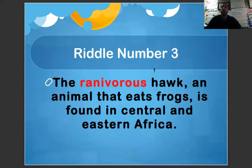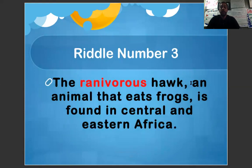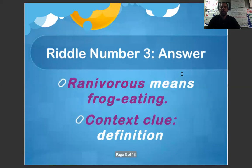Number three. The ranivorous hawk, an animal that eats frogs, is found in Central and Eastern Africa. Answer: ranivorous means frog eating. Our context clue was the definition. Oftentimes a definition will be found right after a statement — ranivorous hawk, an animal that eats frogs, gives us the definition within the context.